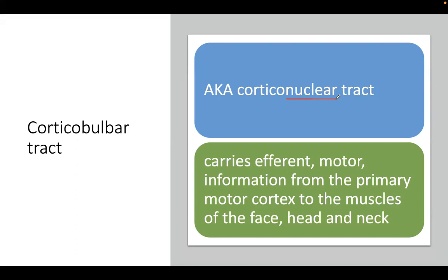The main function of the corticobulbar tract is to carry efferent motor information. Remember the mnemonic: sensory is afferent, motor is efferent. The corticobulbar tract carries motor efferent information from the primary motor cortex to the muscles of the face, head, and neck.